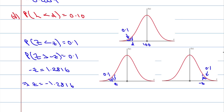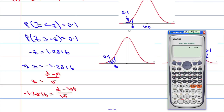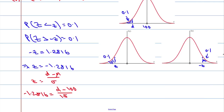Where did the z value come from? Using the formula: z equals D minus mu over sigma. Substituting in z = -1.2816, we get negative 1.2816 equals D minus 100 over 15. Multiplying both sides by 15 and adding 100 gives us D equals 80.776.